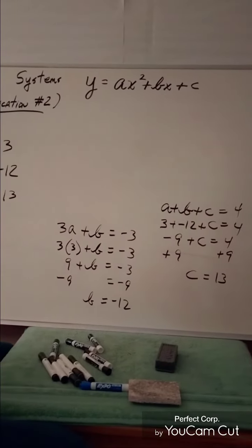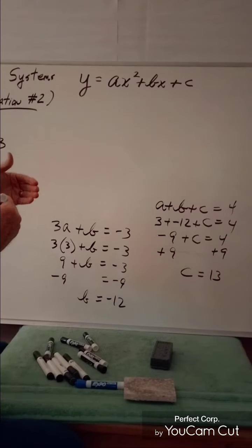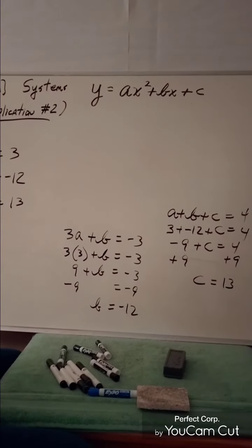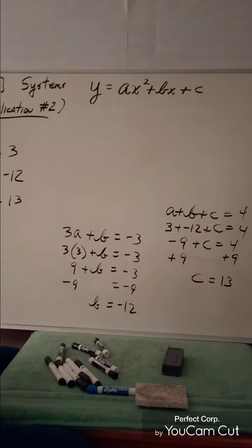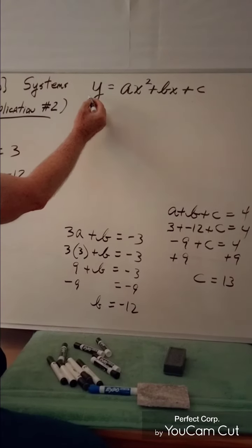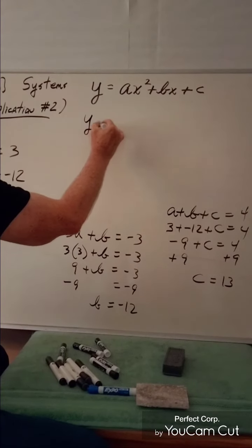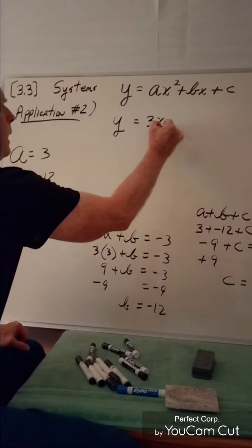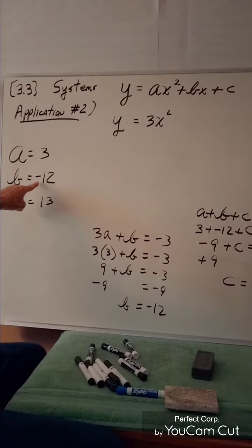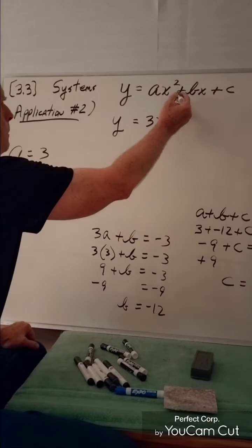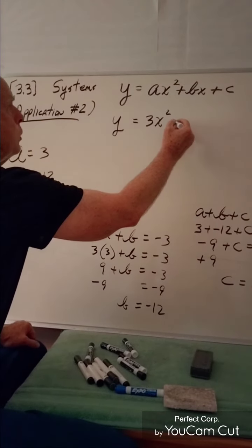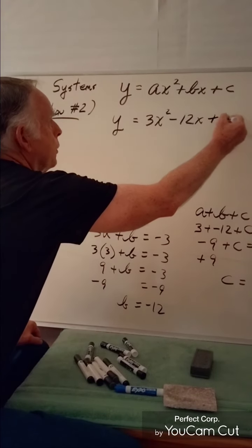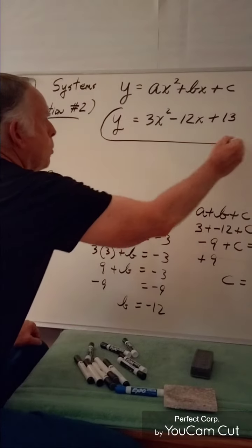Now we write the actual quadratic function that contains those three points. Bringing down y equals: a is 3, so 3x²; b is -12, so -12x; and c is positive 13. The quadratic function is y = 3x² - 12x + 13.